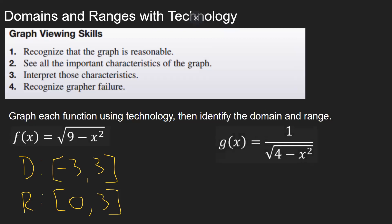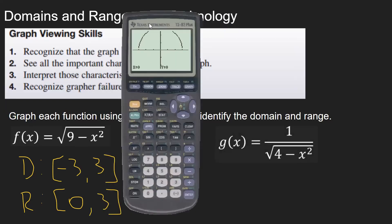is one over square root four minus x squared. So if we go back to the y equals menu, clear this out, you have one divided by square root four minus x squared. Make sure this is all in parentheses in the denominator. I'm going to do zoom six again for my standard viewing window.